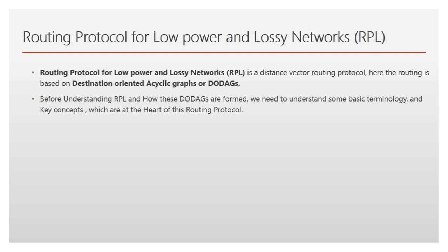Routing Protocol for Low Power and Lossy Networks is what we call RPL. It is a distance vector routing protocol, and here the routing is based on a special kind of DAG — a Directed Acyclic Graph. That special kind of DAG is known as a Destination Oriented Acyclic Graph, or DODAG.